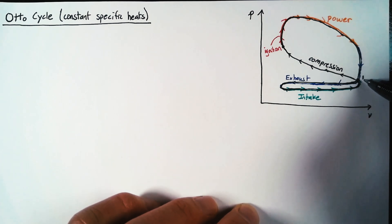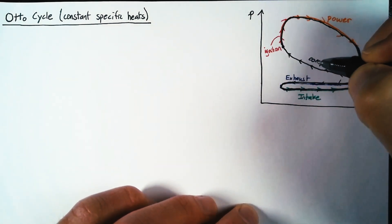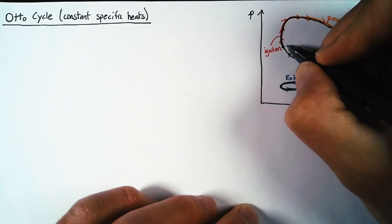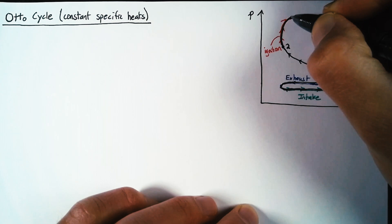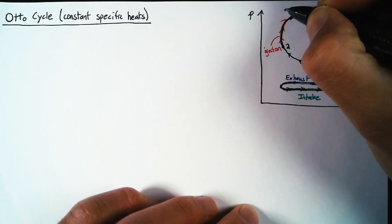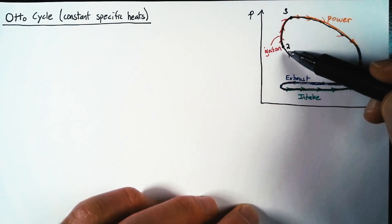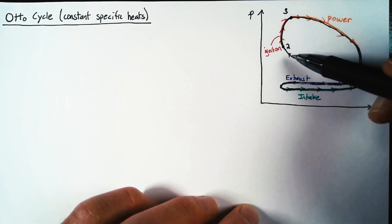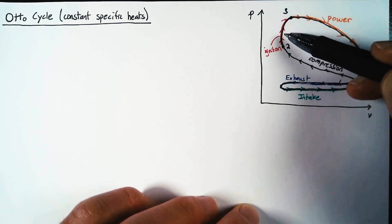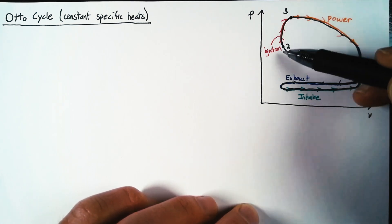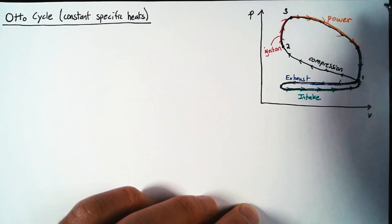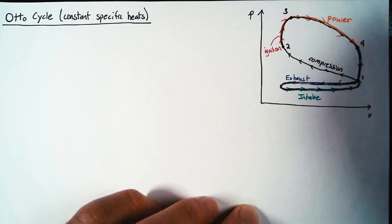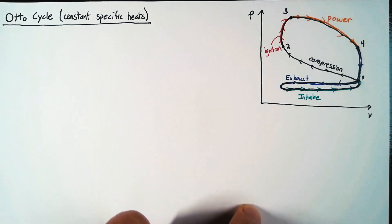This first state, we're calling state one — right before compression. Right as ignition starts, we're going to call that state two. Then at the top of this curve, we're going to call this state three, because ignition isn't truly instantaneous; it continues even after we enter the power stroke, but most of it happens between state two and three. Once we start exhausting all of our combustion products, we call that state four — roughly where the exhaust valve opens.